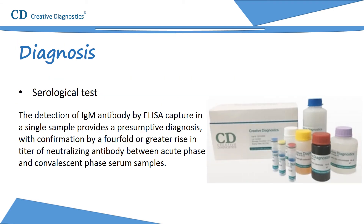IgM antibodies appear during the first week of illness. Detection of IgM antibody by ELISA capture in a single sample provides a presumptive diagnosis, confirmed by a four-fold or greater rise in neutralizing antibody titer between acute phase and convalescent phase serum samples. Older serologic methods such as hemagglutination inhibition (HI) have largely been replaced by ELISA. Specific hemagglutination-inhibiting antibodies appear first, followed rapidly by antibodies to other flaviviruses.